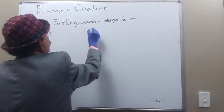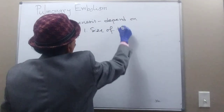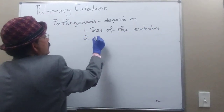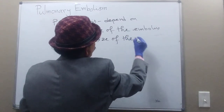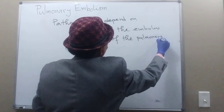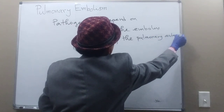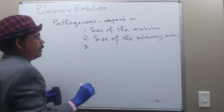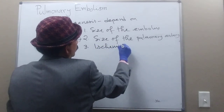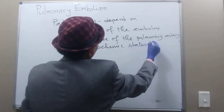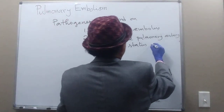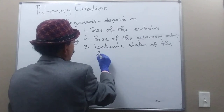Pathogenesis depends on the size of the embolus — a big embolus causes a bigger problem — and on the size of the pulmonary artery involved. It also depends on the ischemic status of the person; those who are ischemic have more chance of complications.